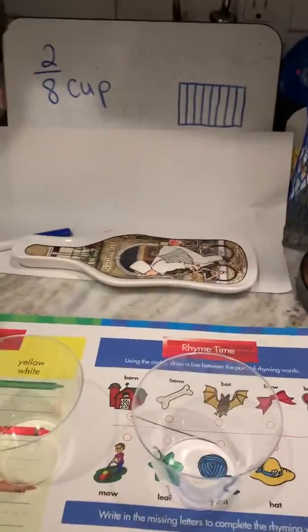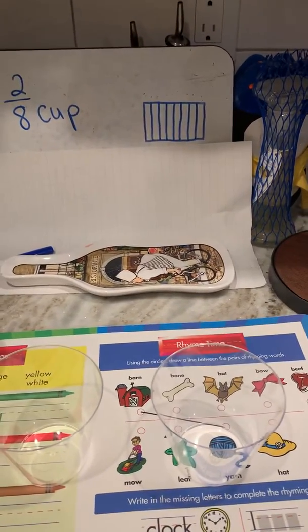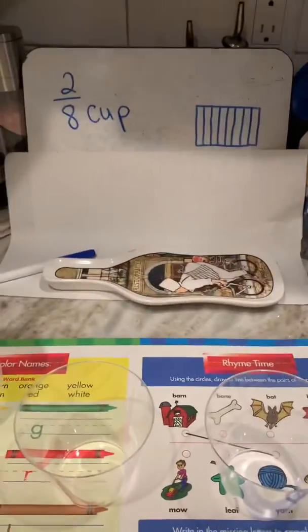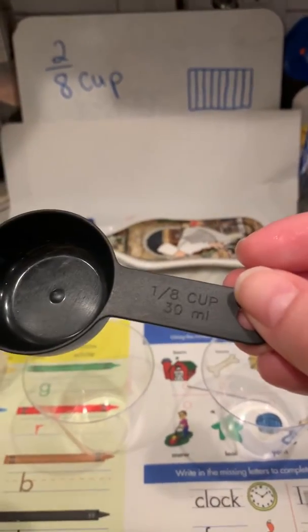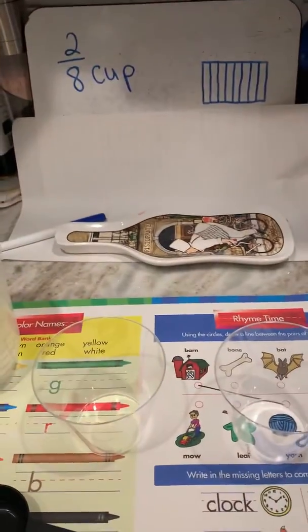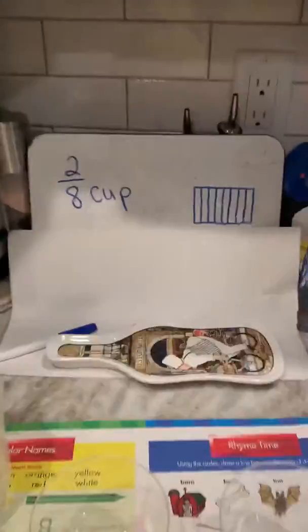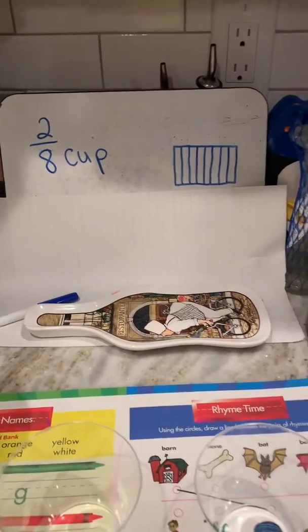So you know how we always say work smarter, not harder, right? So let's pretend that, so here I have my one eighth cup and here I have one fourth cup. Okay. So let's say that a recipe calls for two eighths cup of some kind of ingredient, right?